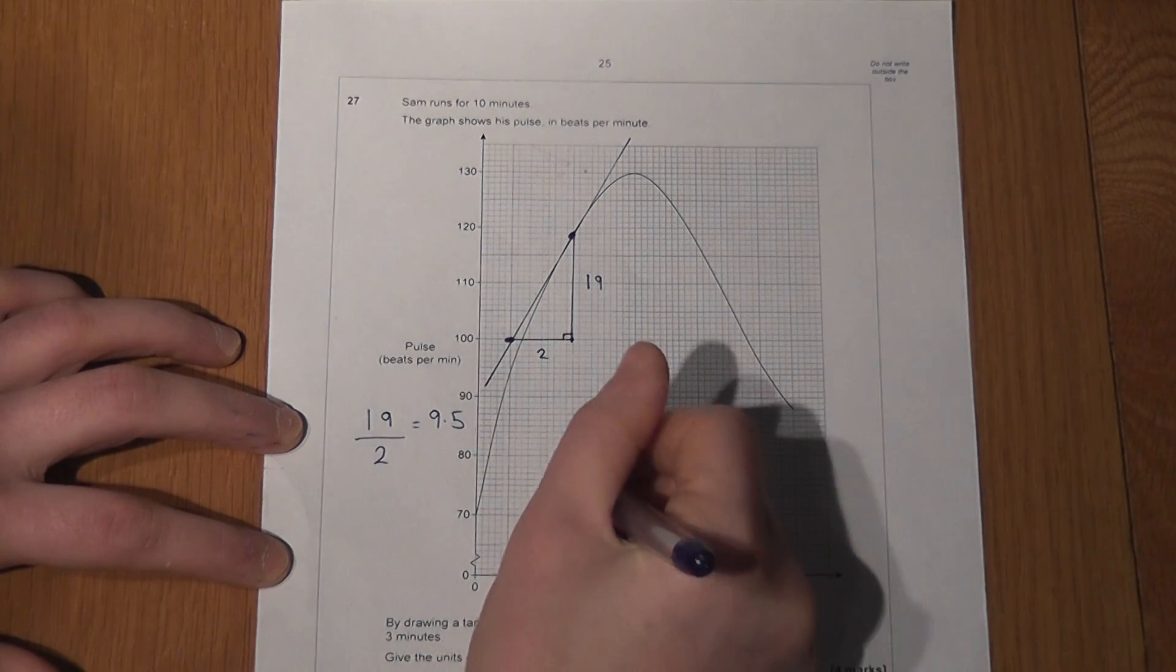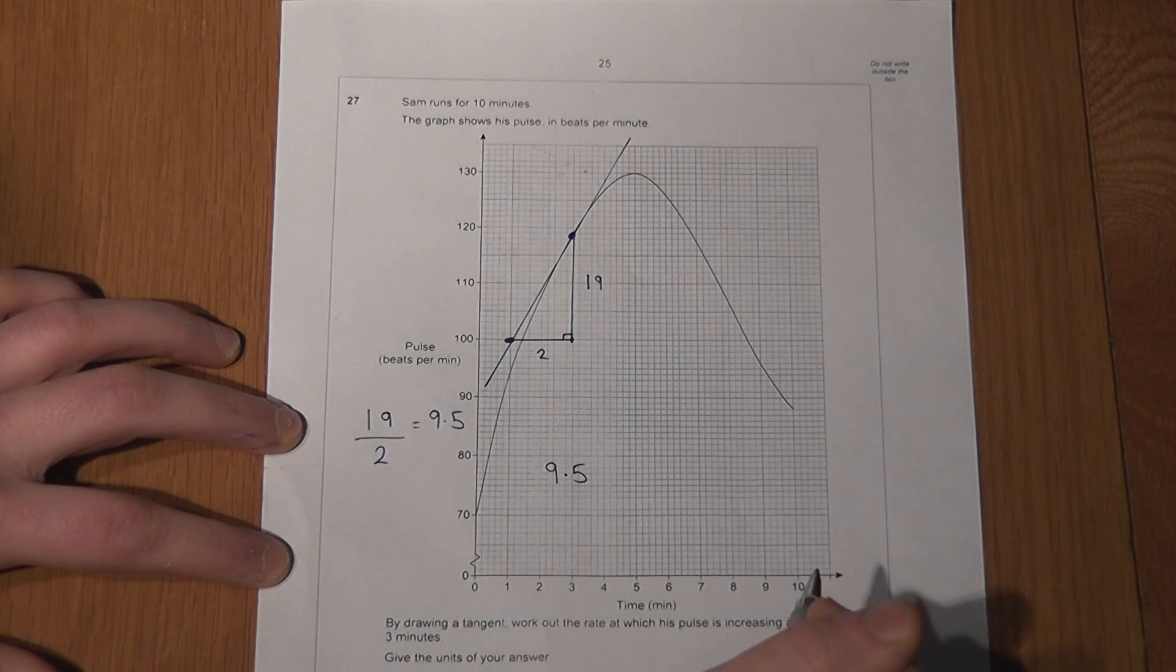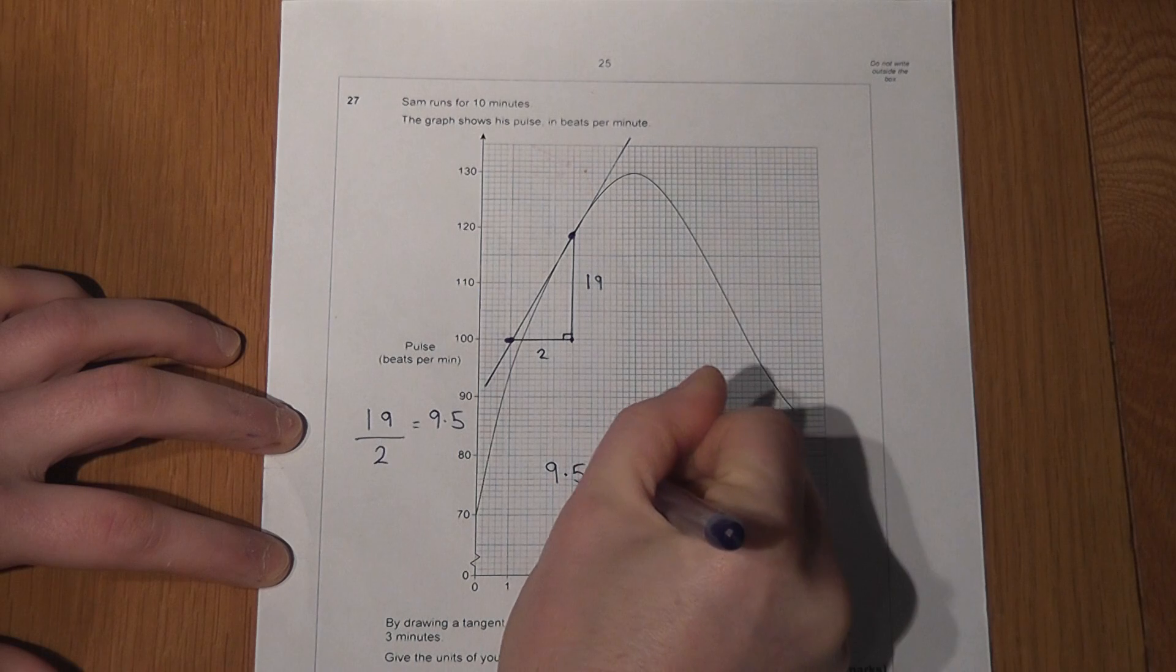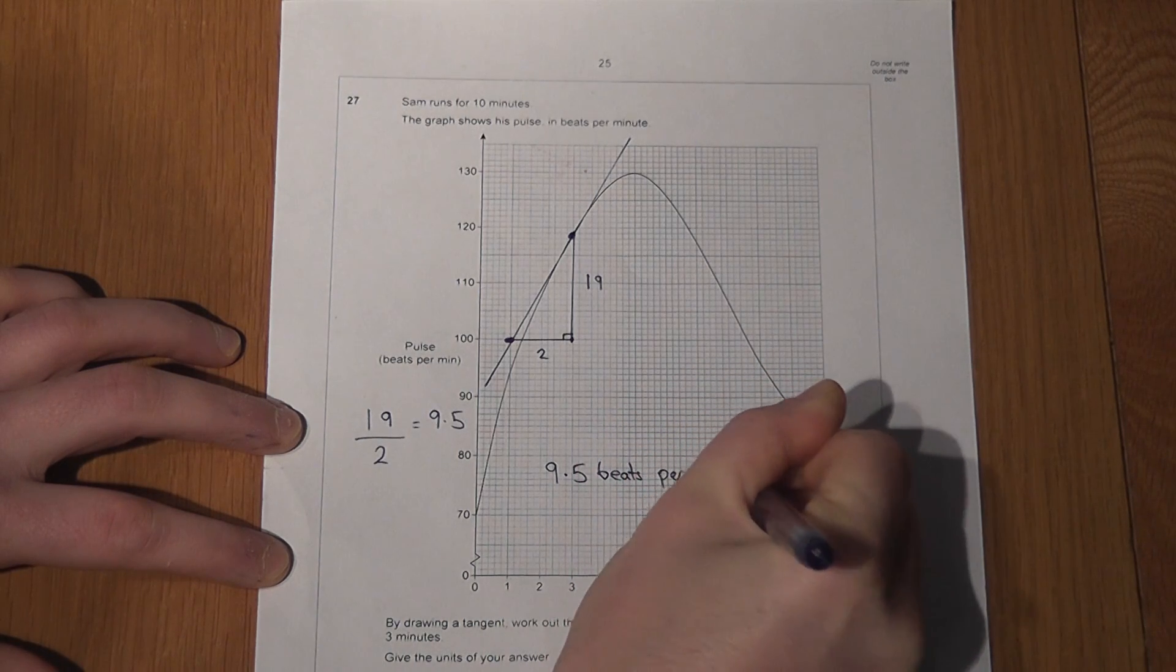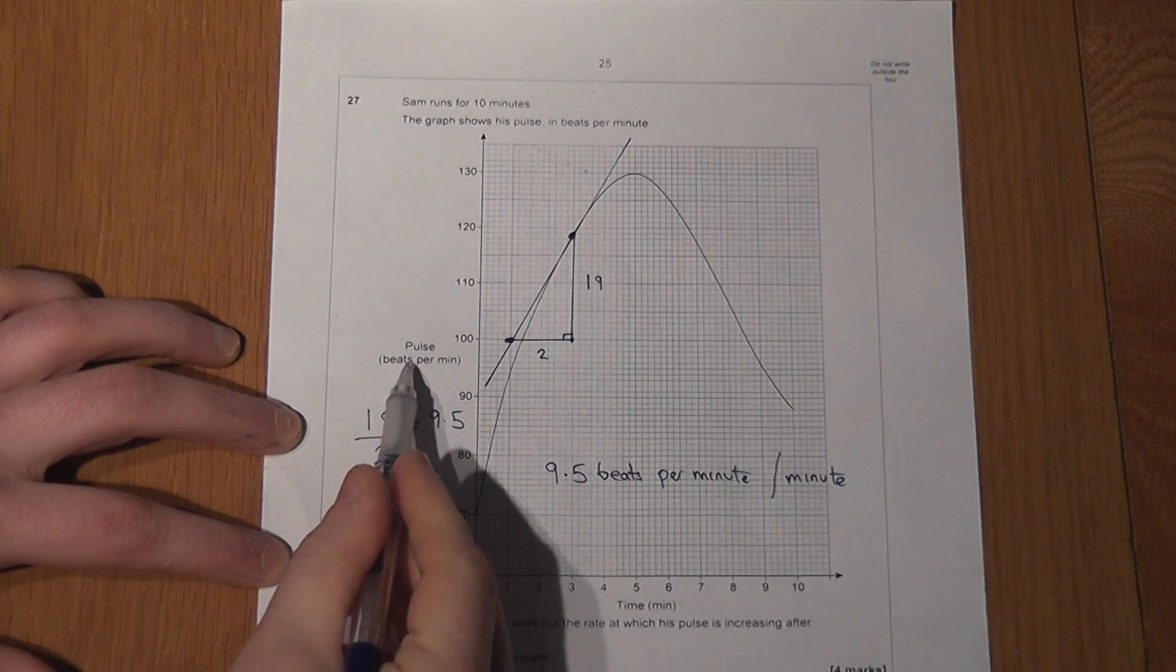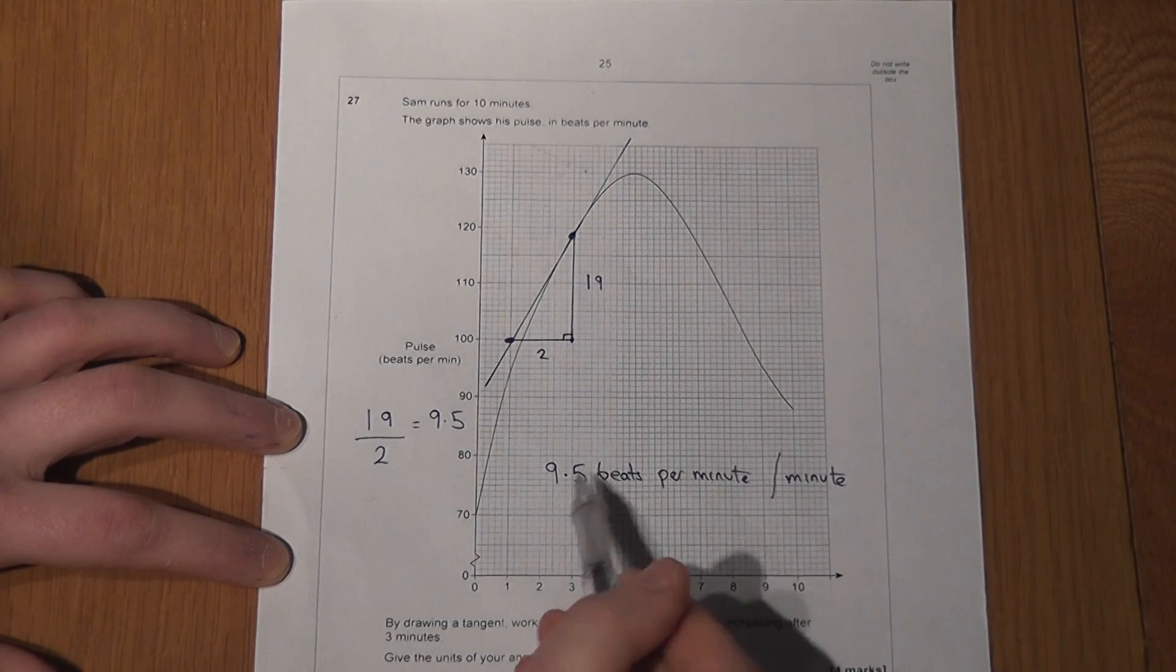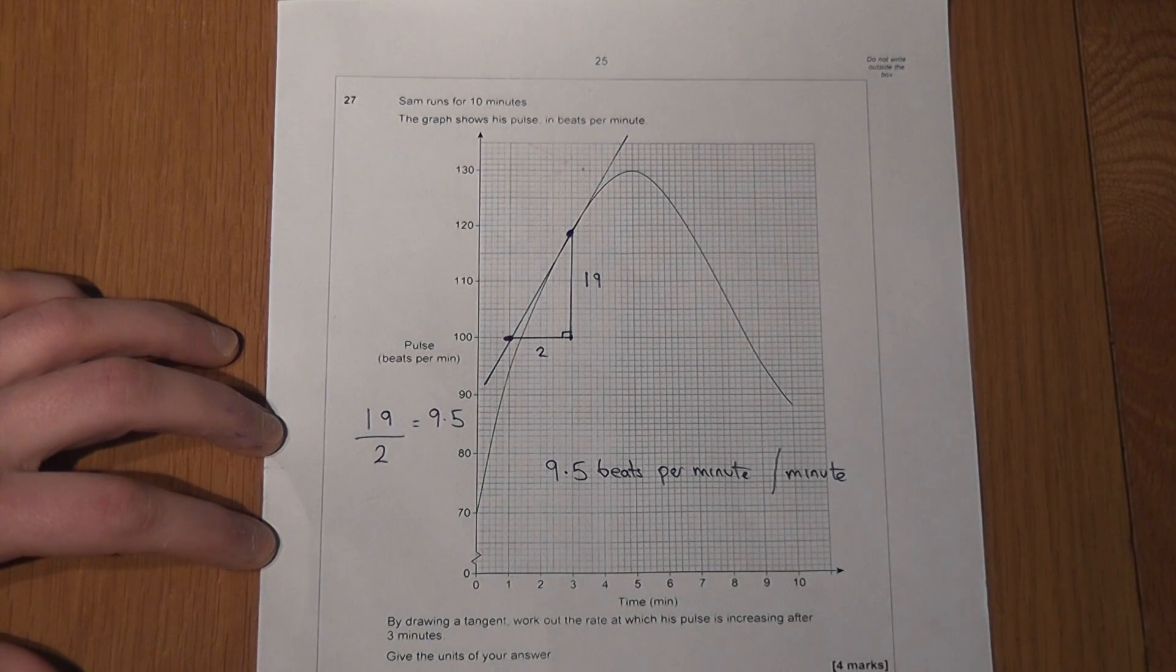So the answer is 9.5 beats per minute per minute. The units are the y-axis unit over the x-axis unit. So 9.5 beats per minute per minute is the rate of change of this person's pulse.